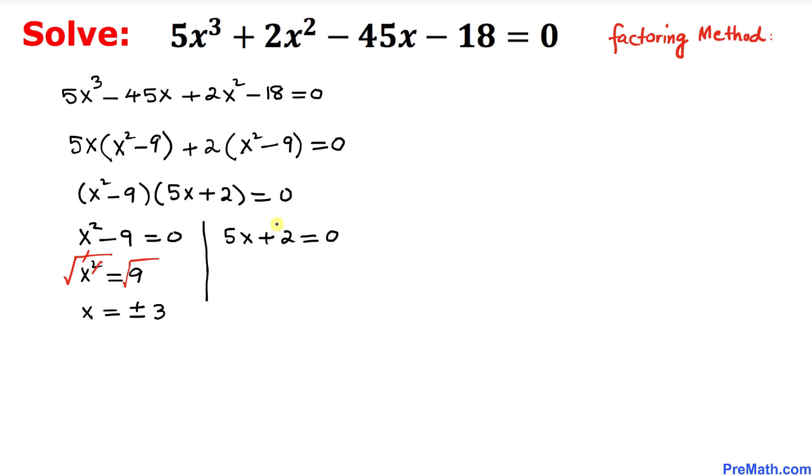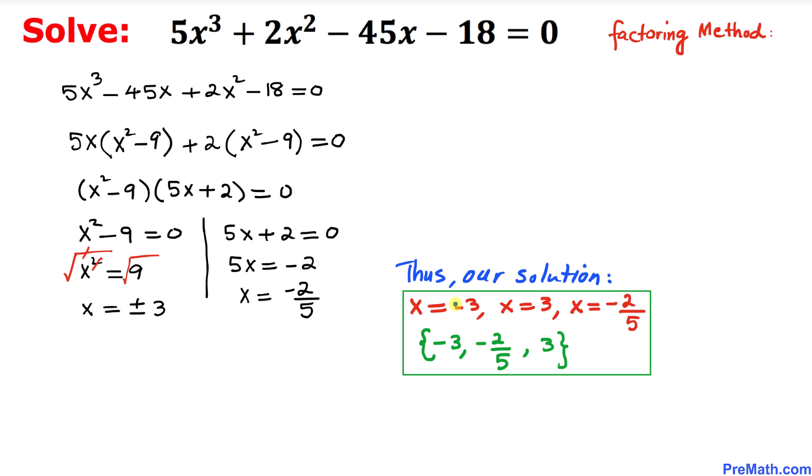Let's focus on this equation on the right hand side. Let's move this 2 on the other side, so 5x turns out to be equal to -2. Thus x turns out to be -2/5.